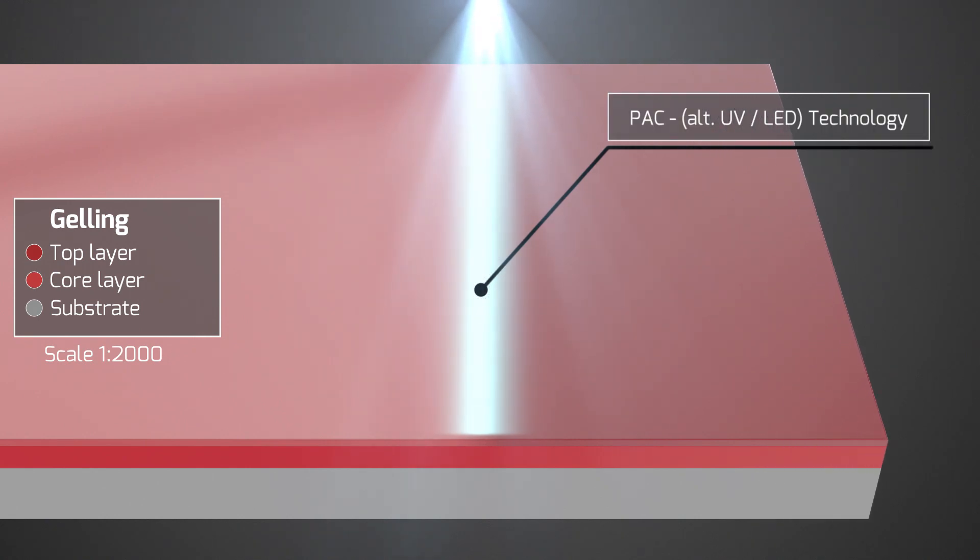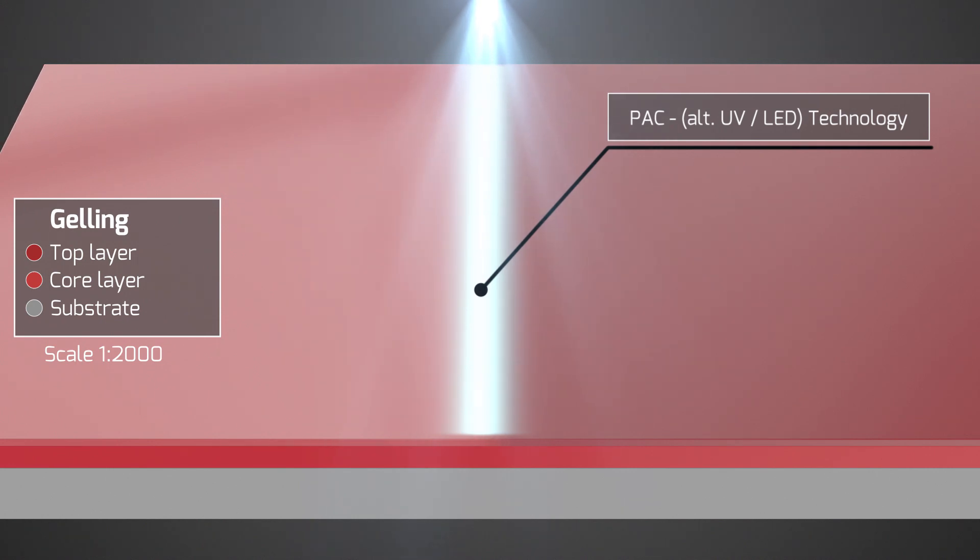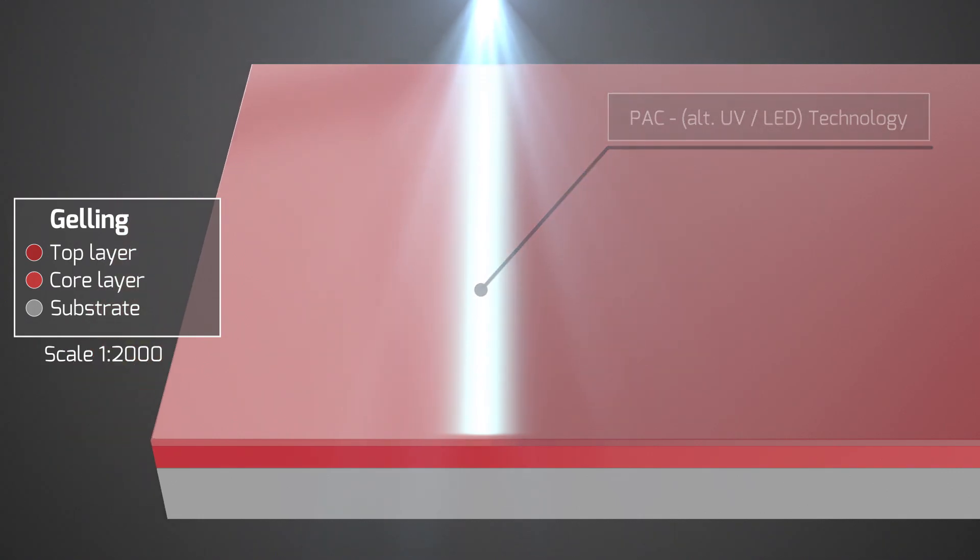In the macro view we see that the gelling increases the viscosity. This affects the feel of the lacquer after curing. The gelling leads to a finer folding of the lacquer surface.